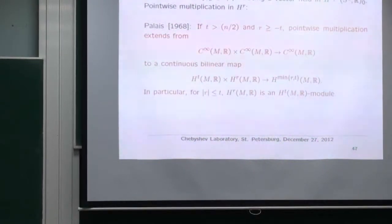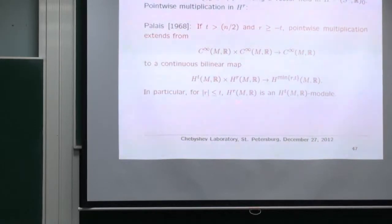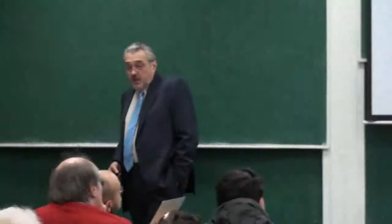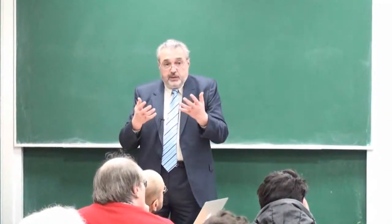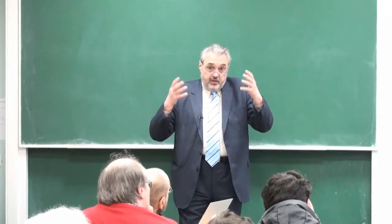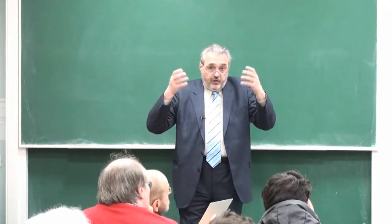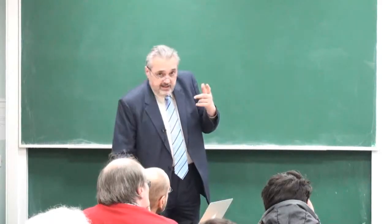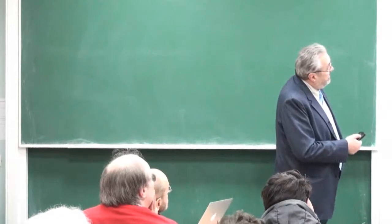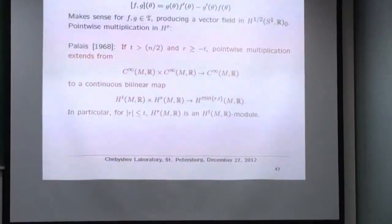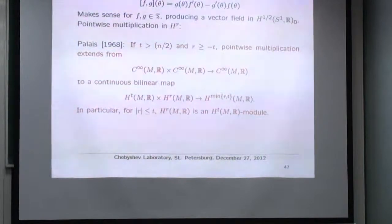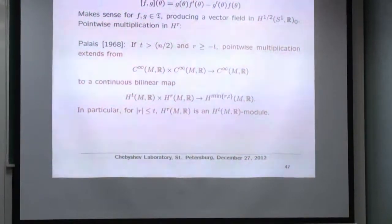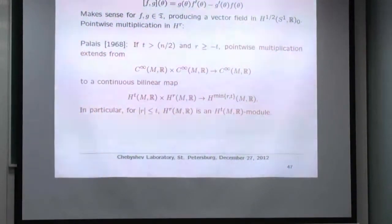There is a Lie algebra structure. I want to recall a theorem of Palais, which is not widely known: the Sobolev multiplication theorem. We all learn that H^{s₁} × H^{s₂} → H^{min(s₁,s₂)} if s₁, s₂ > n/2 + 1. But the actual result — a corollary of a tougher theorem in Palais's book on foundations of global analysis — says: if t > n/2 and r ≥ −t, then multiplication extends in this improved fashion. This is the best result I know, and it is classical.